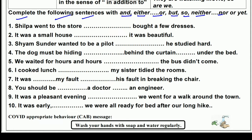For example, 'Shilpa went to the store __ bought a few dresses.' Here 'and' will come. Next sentence: 'It is a small house __ it was very beautiful.' Here 'but' will come because there are two contrasting ideas — it was a small house, but it was very beautiful.